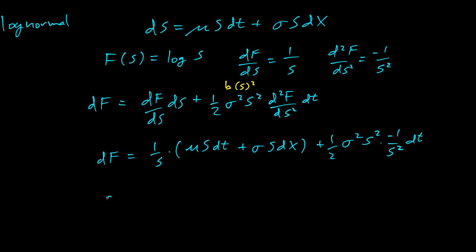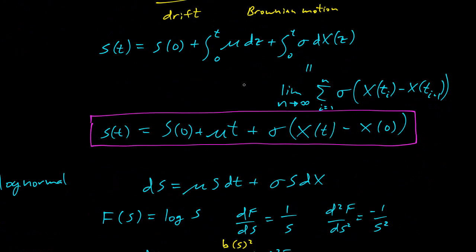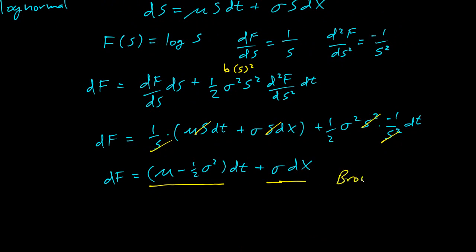Now I collect terms together. The s here cancels out the s's. s² cancel here. Now I collect up all the dt's. I have a μ dt here. I have a negative one half σ² dt over here. So I have μ minus half σ² dt. And what do I have with dx? Just σ dx. If you look at this, you can see we have something dt, σ dx. If you look at the previous problem, this is exactly Brownian motion with drift.